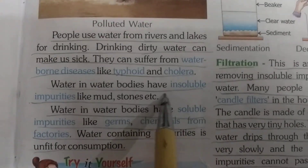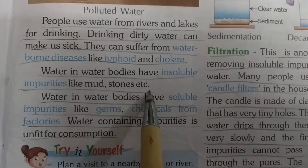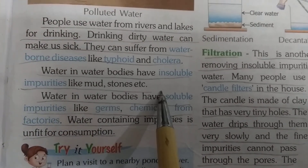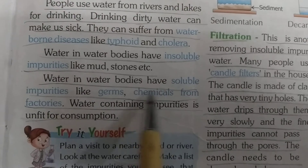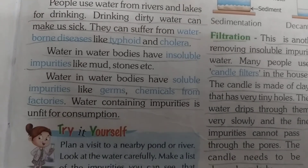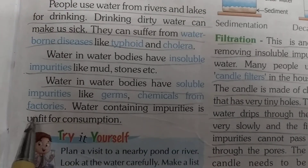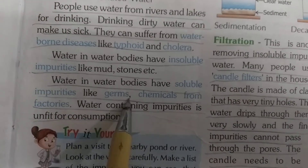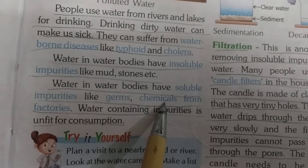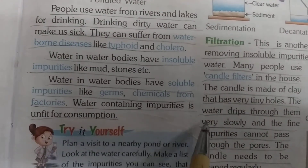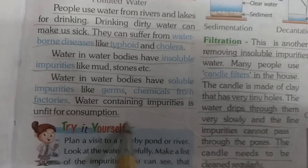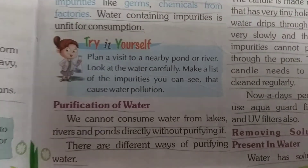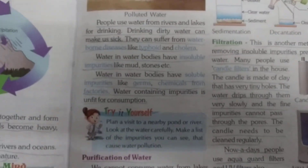Water in water bodies has insoluble impurities like mud and stones. It also has soluble impurities like germs and chemicals from factories. These are soluble impurities. Water containing impurities is unfit for consumption. Revise for 5 minutes.